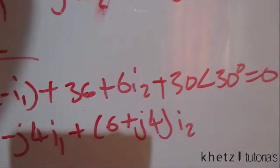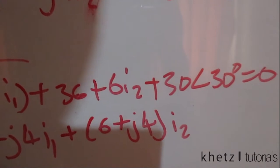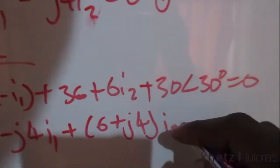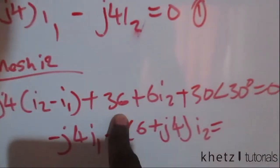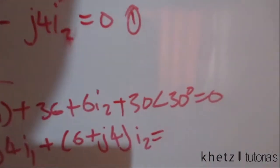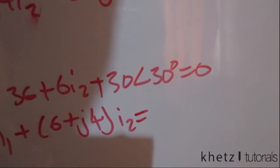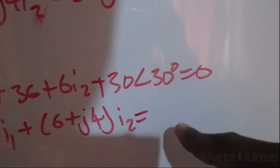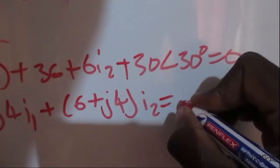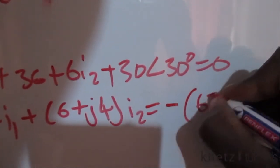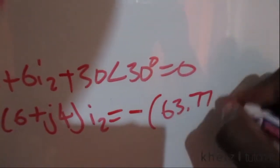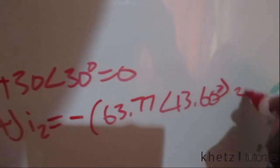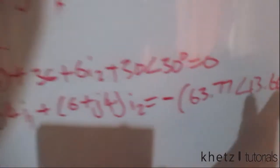Simplifying the mesh 2 equation: grouping I1 terms gives negative j4·I1; grouping I2 terms gives (6 + j4)·I2. Moving the constants — 36 and 30∠30° — to the right side and combining them gives negative 63.77 with an angle of 13.60 degrees. This is our second equation.